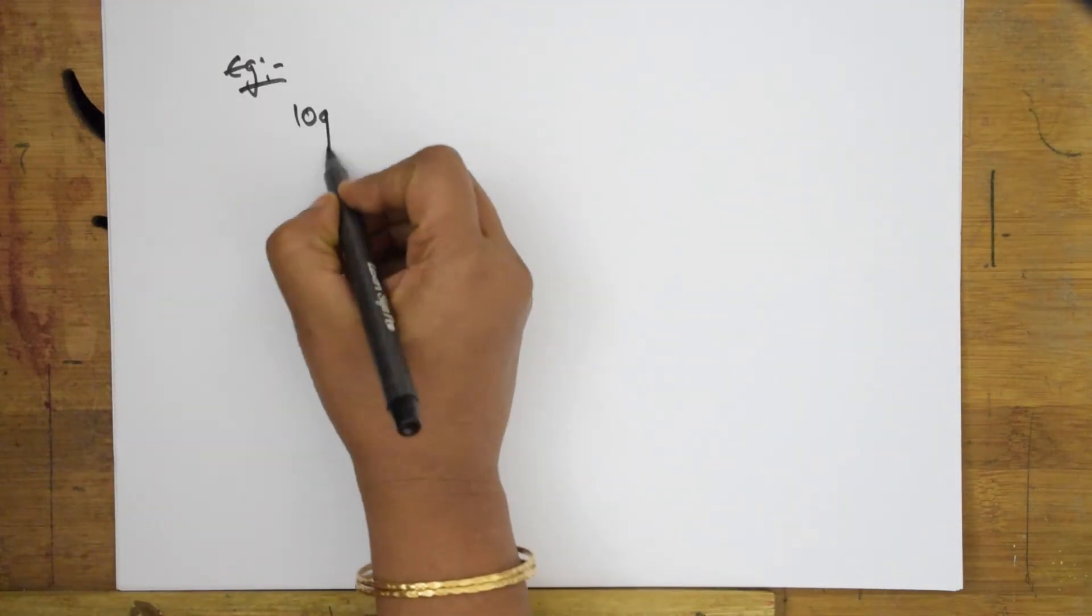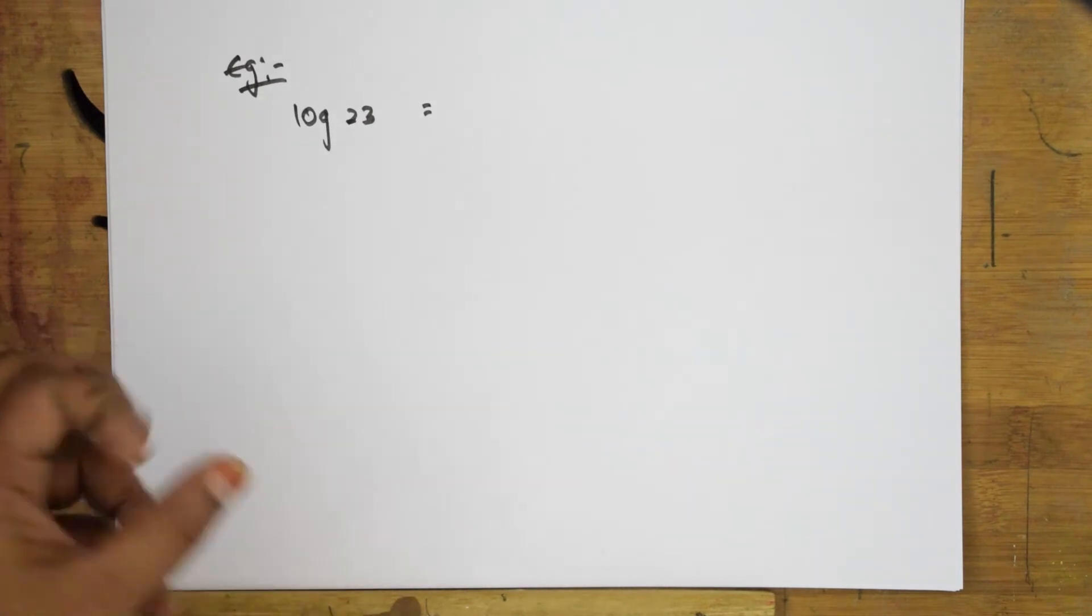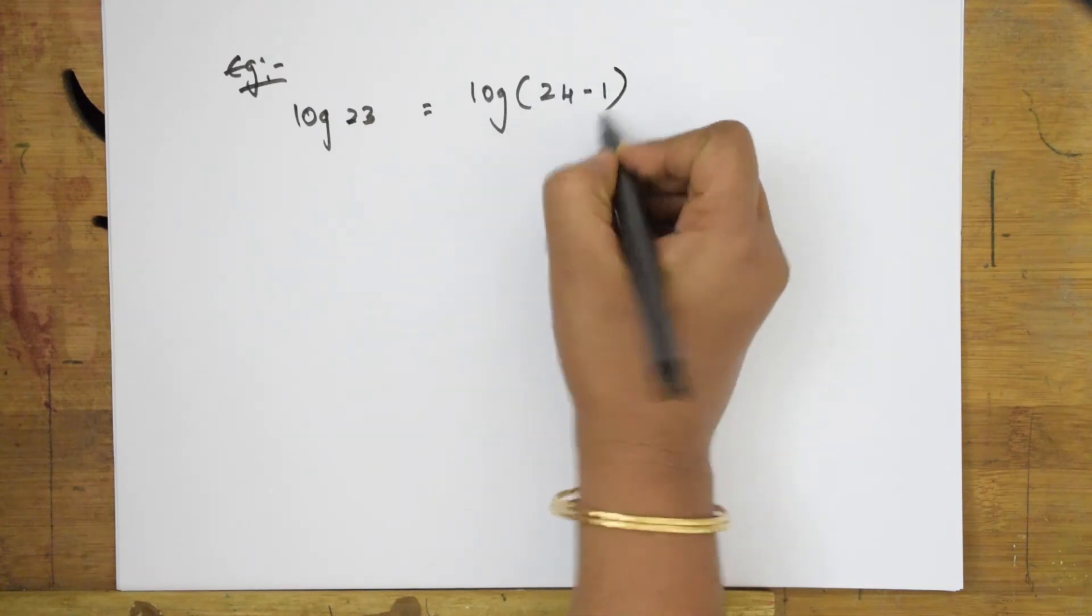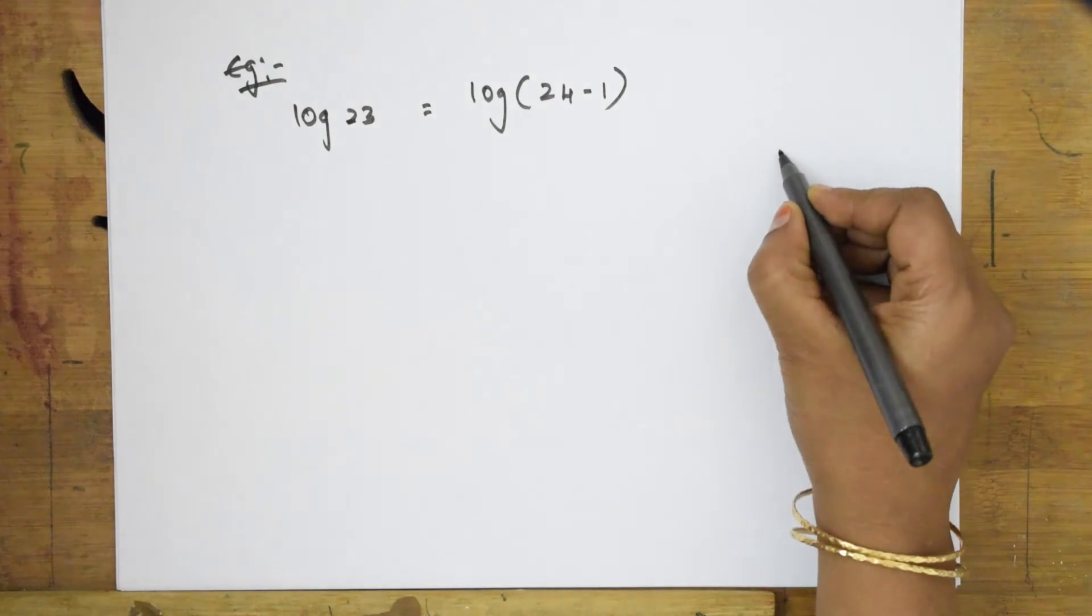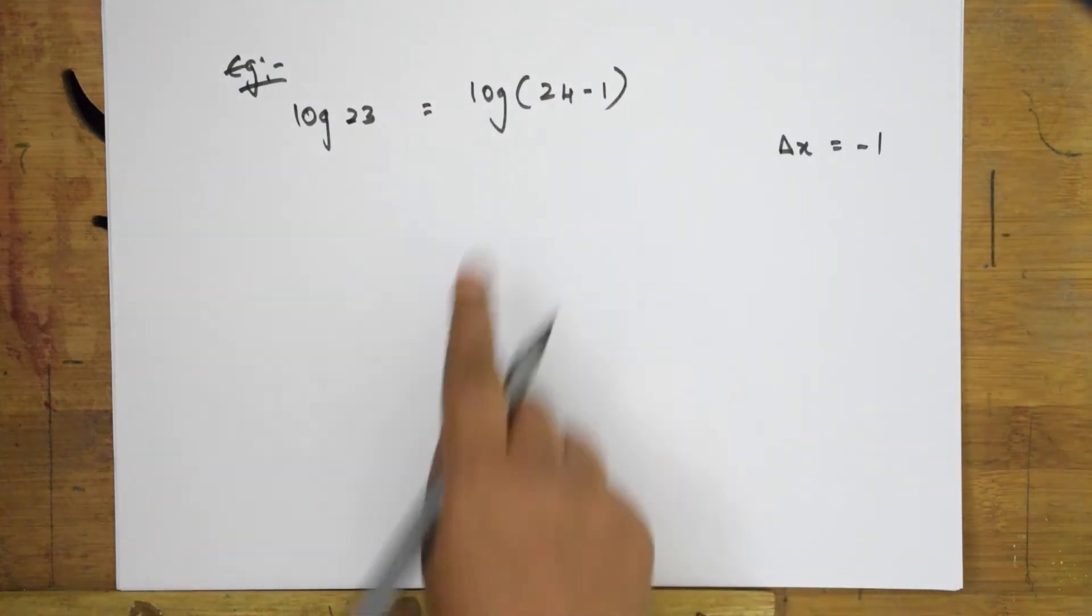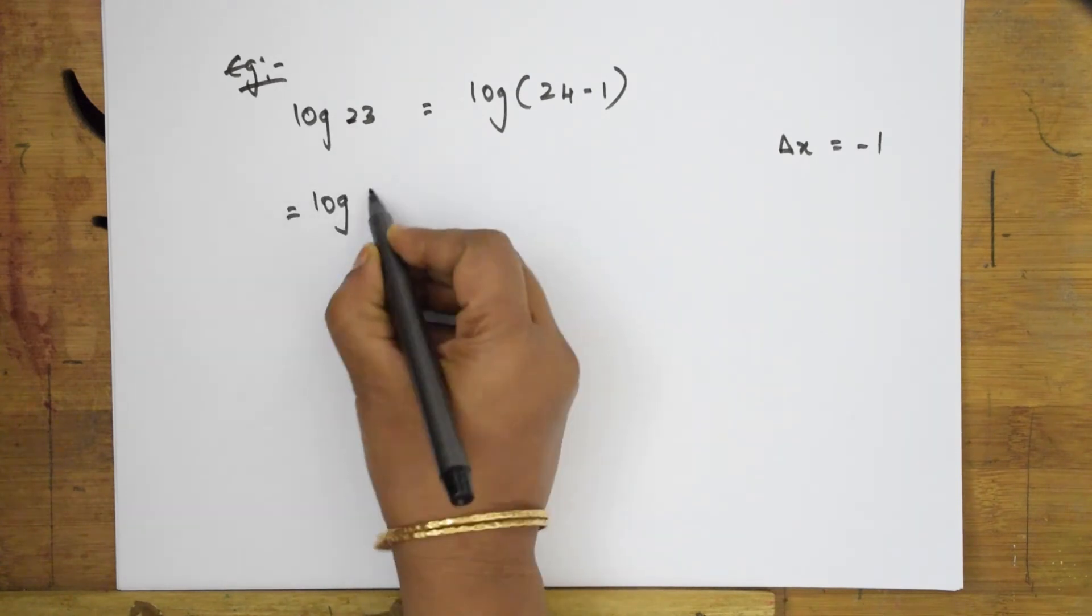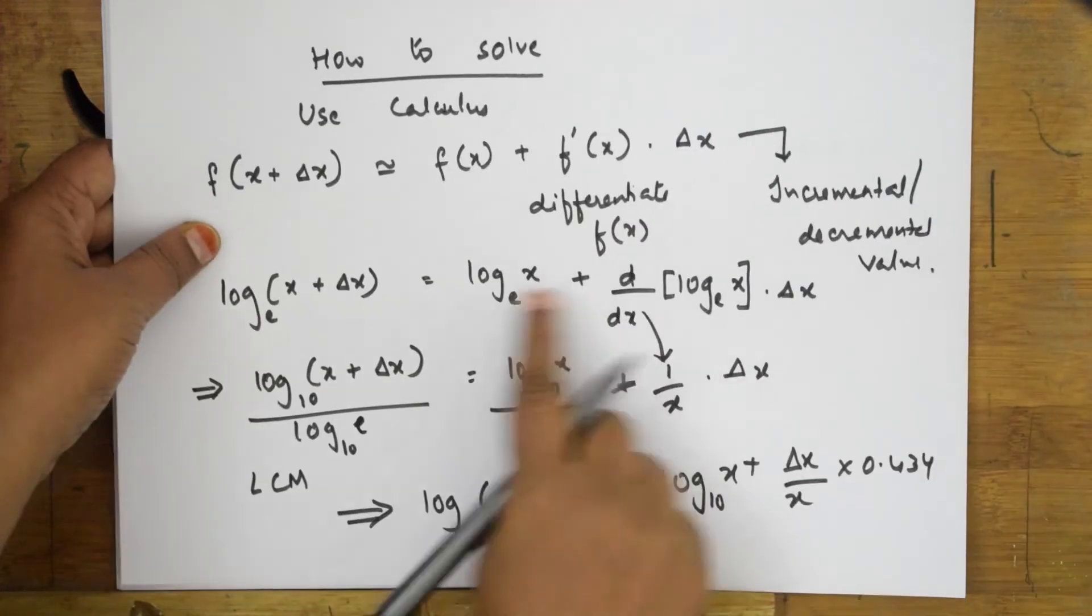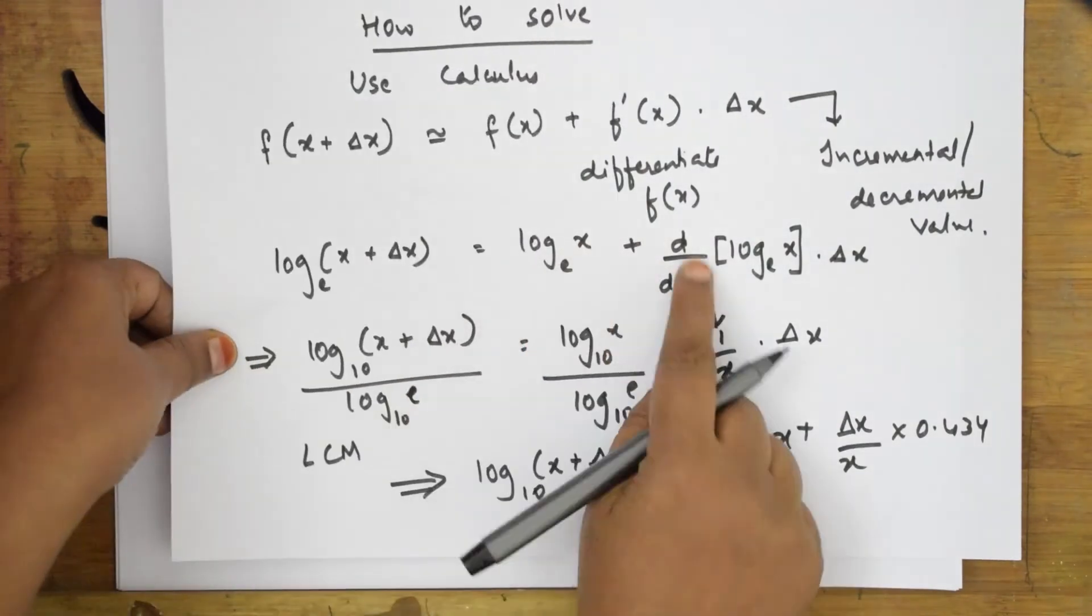Let us take one example and apply the same thing here. Suppose if I have an example, like there is a question given to me, let us solve this example. Log 23 is given to me. How can I write 23? Basically, normal log 20 or 24, it is easy for me. Now, such a number is given to me. I can use this formula log(24 - 1). What is this value minus 1? It is a decremental value. Δx is minus 1 here.